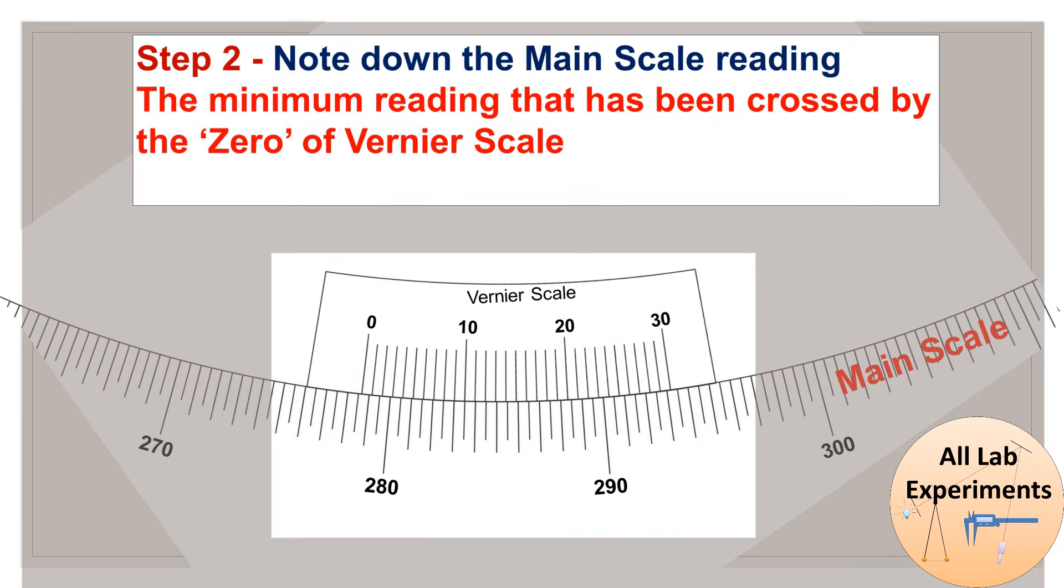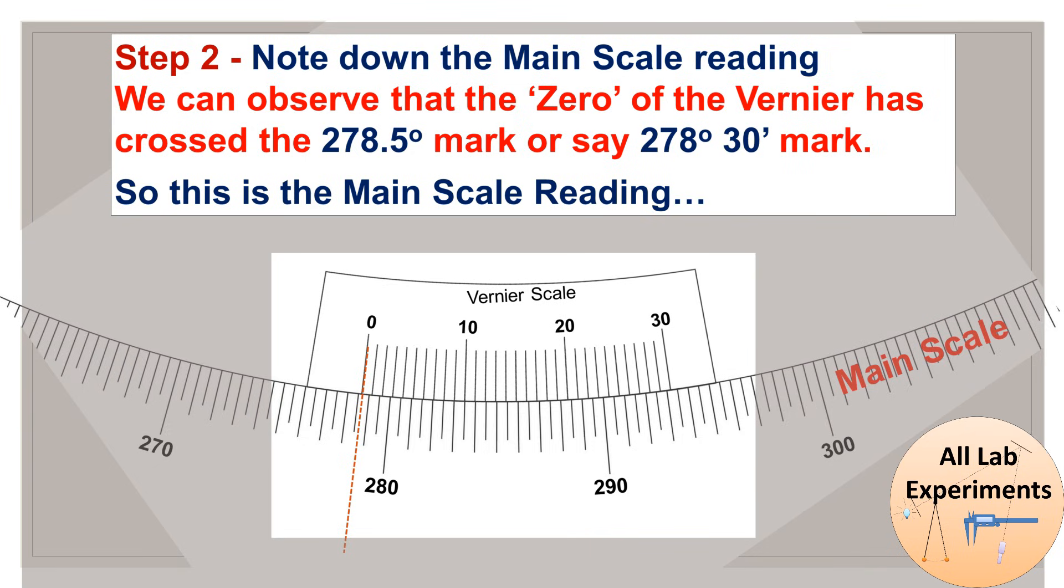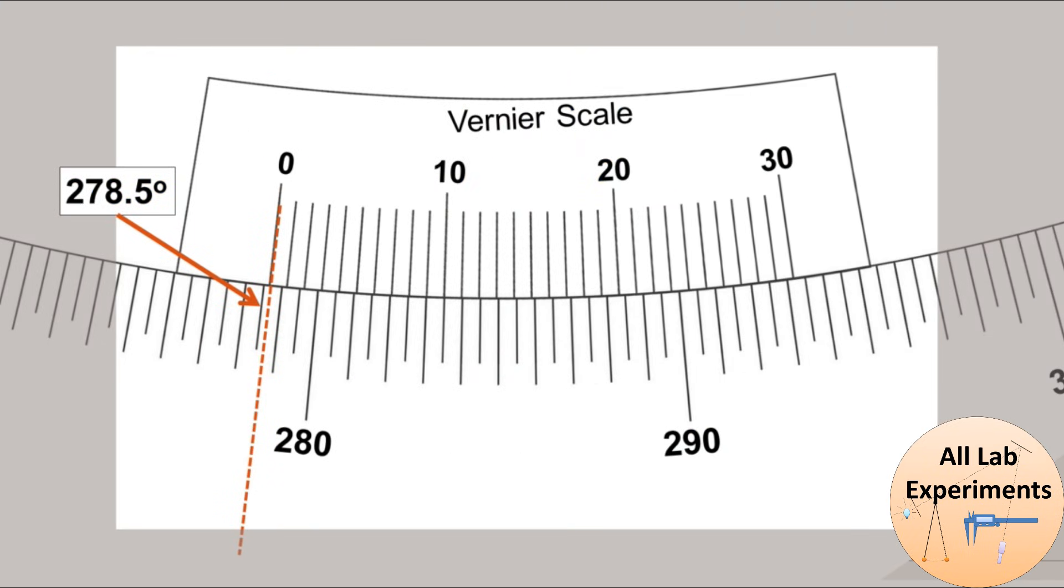Now step 2: note down the main scale reading. So what is a main scale reading? The main scale reading is the minimum reading that has been crossed by the zero of vernier scale. So now let us read a random measurement. In this system, this is the zero of vernier scale. It has crossed 278.5 degrees. I can also say it's 278 degrees and 30 minutes. So this is the main scale reading.